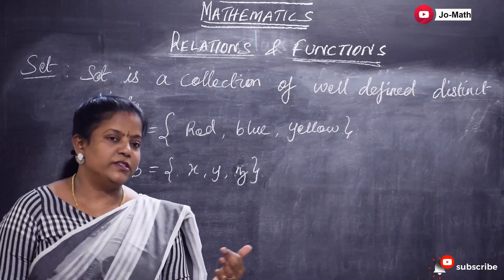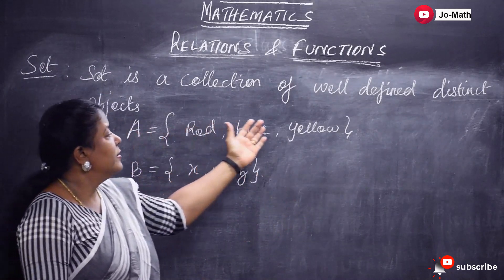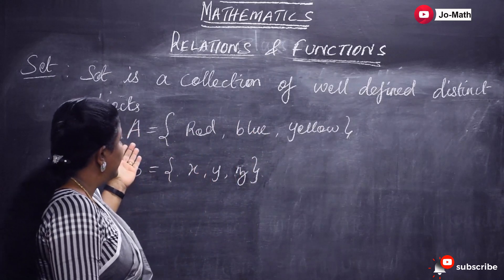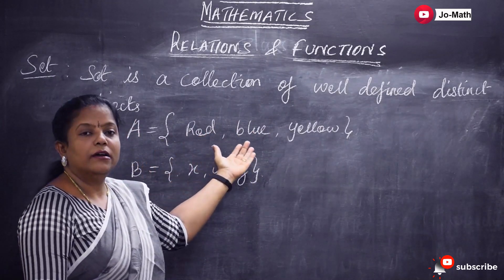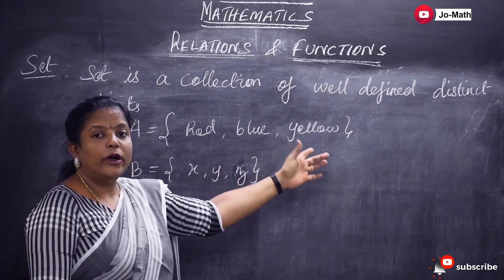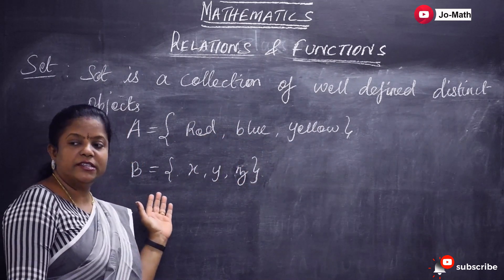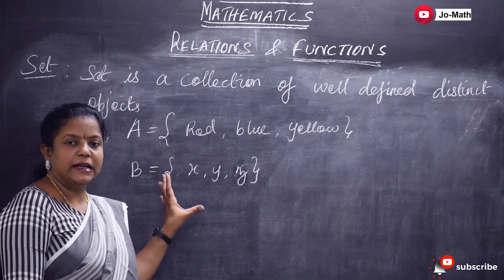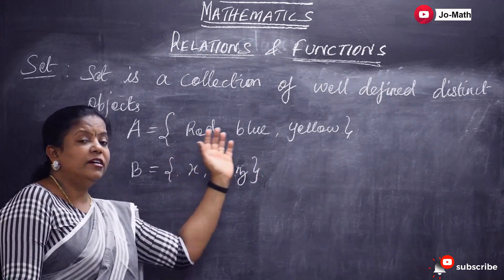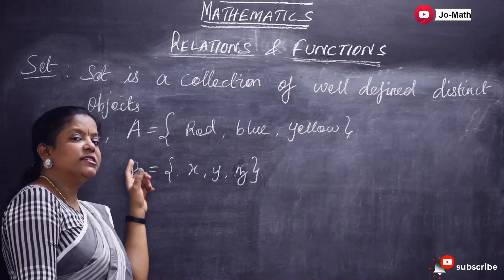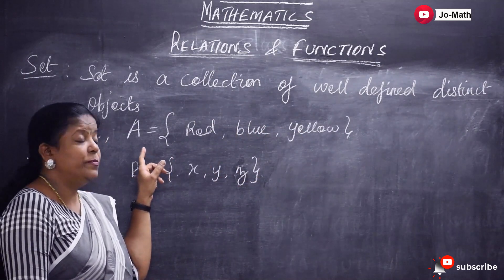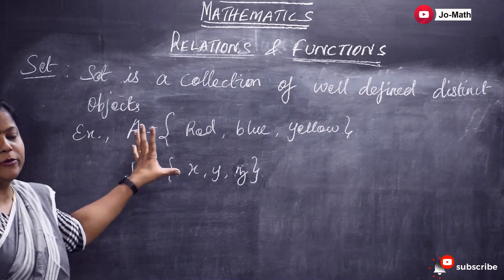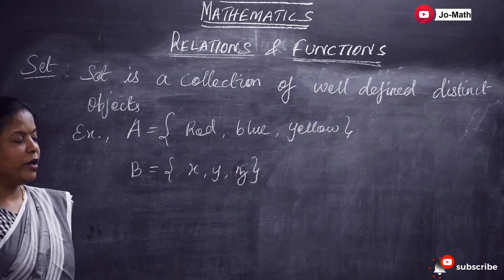All of you know what a set is. A set is a well-defined collection of distinct objects. For example, we can take set A as the set of all colors — red, blue, yellow — and then another set B as {X, Y, Z}. The elements are listed within curly braces and sets are named with English alphabets from A to Z.